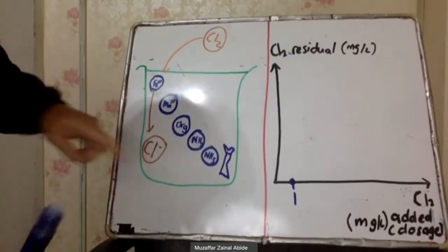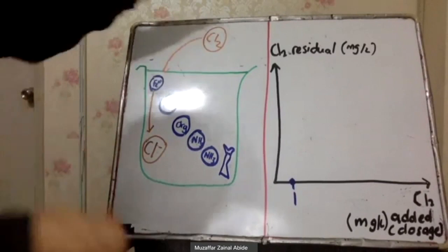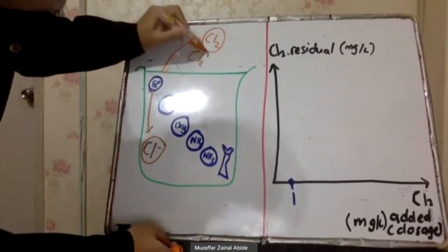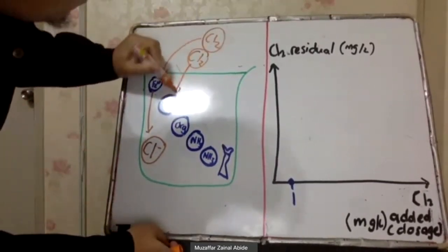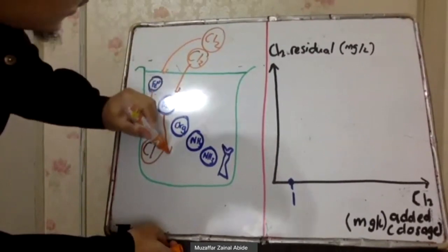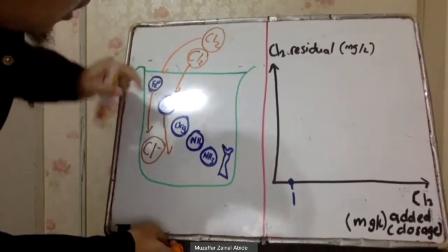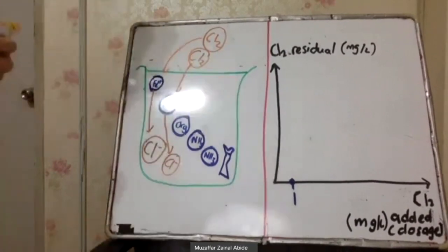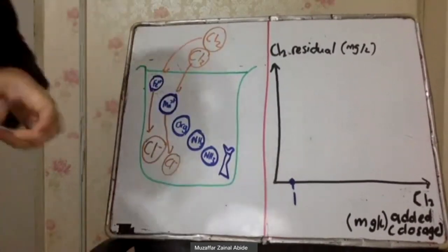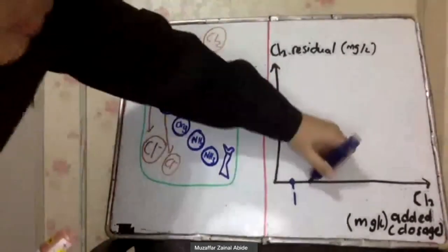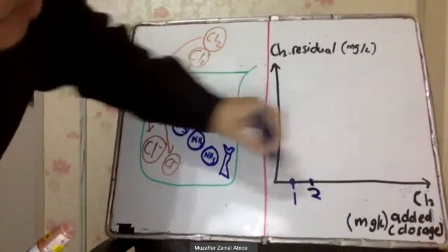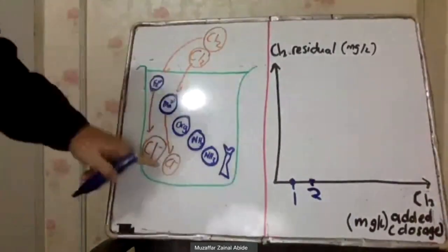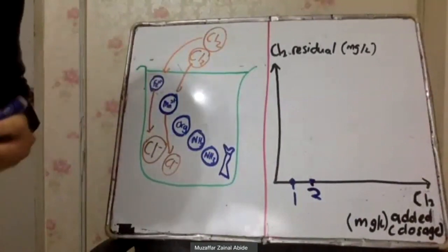Then we add the second chlorine. It will react with manganese, oxidizing it and again producing chloride ion (Cl⁻). We have added the second chlorine but still there is no residual chlorine, because we are producing Cl⁻, which is not a disinfectant.